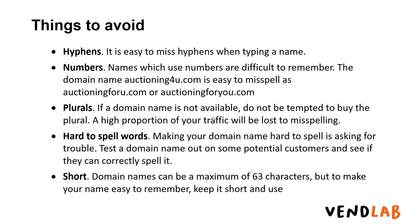You should avoid numbers because people will not know whether it should be spelled out or whether it should be the number. An example of a poor URL is 'auctioning for you' — it's easy to misspell as people don't know if it's '4' or 'for', or 'U' or 'you'. Avoid plurals too, as people will misspell them. Avoid hard-to-spell and foreign words, and try to keep your domain short. Domain names can be a maximum of 63 characters but you should try to keep it short and easy to remember.